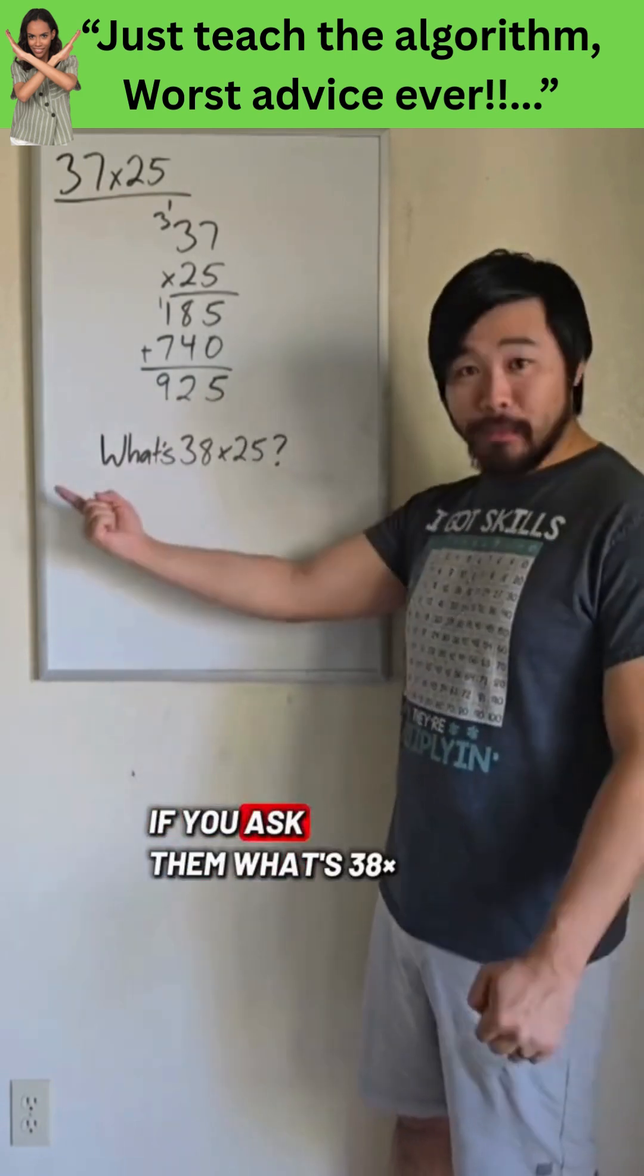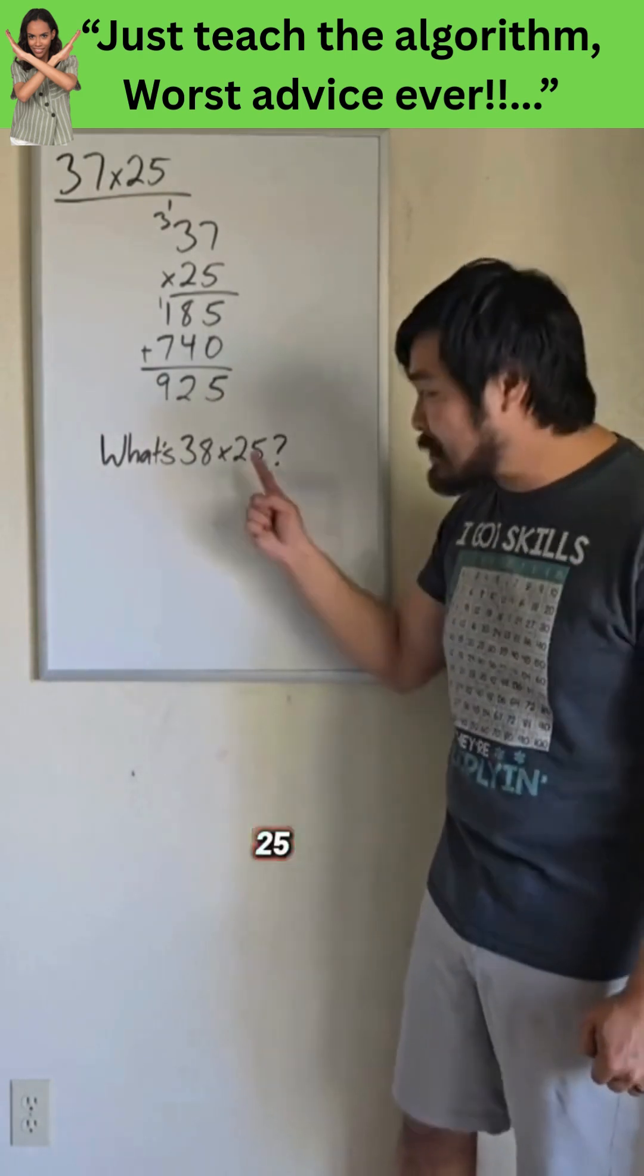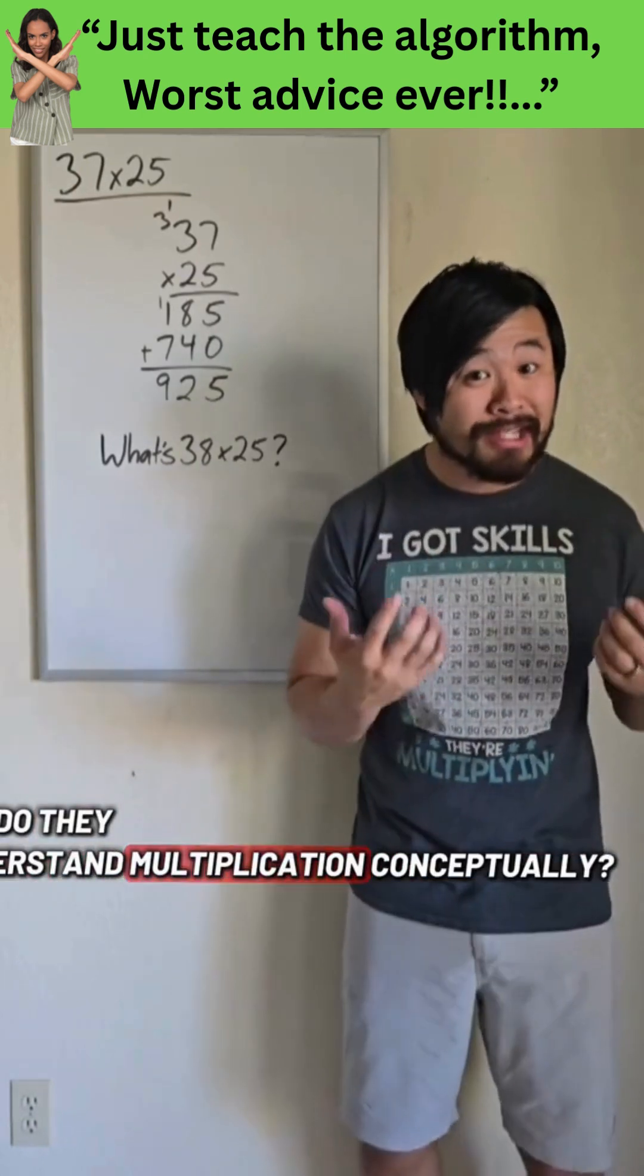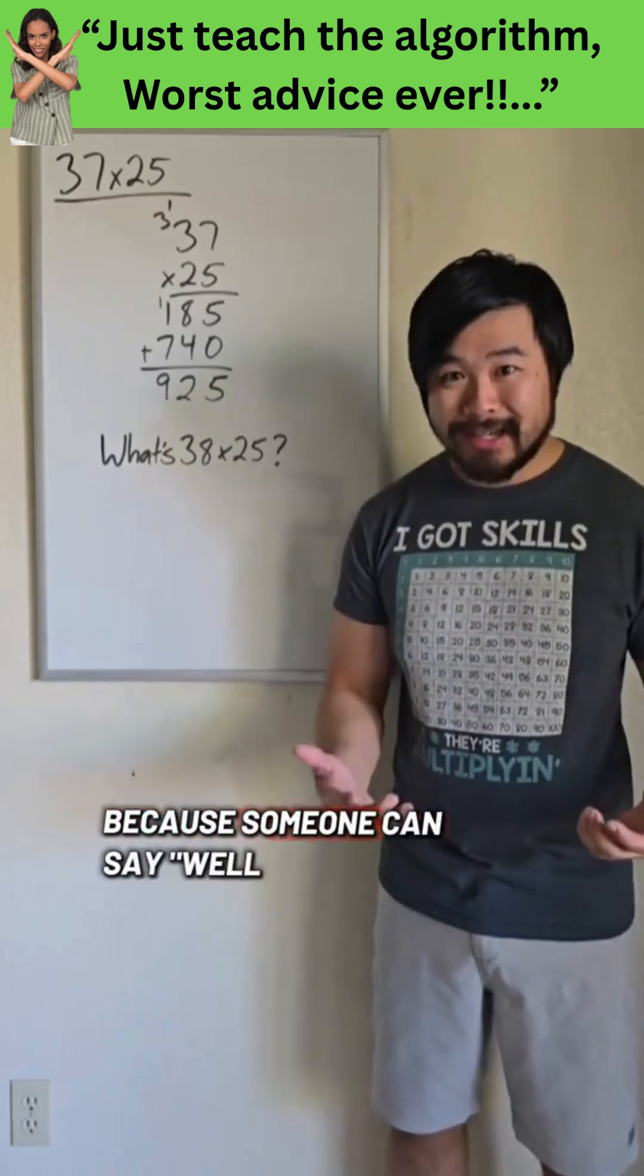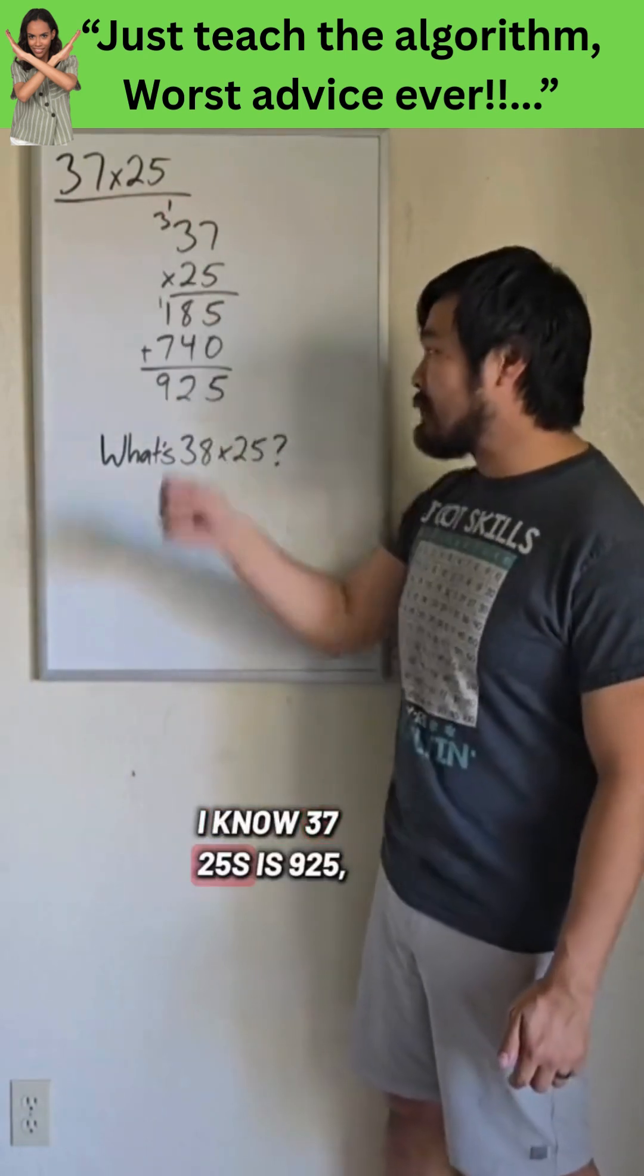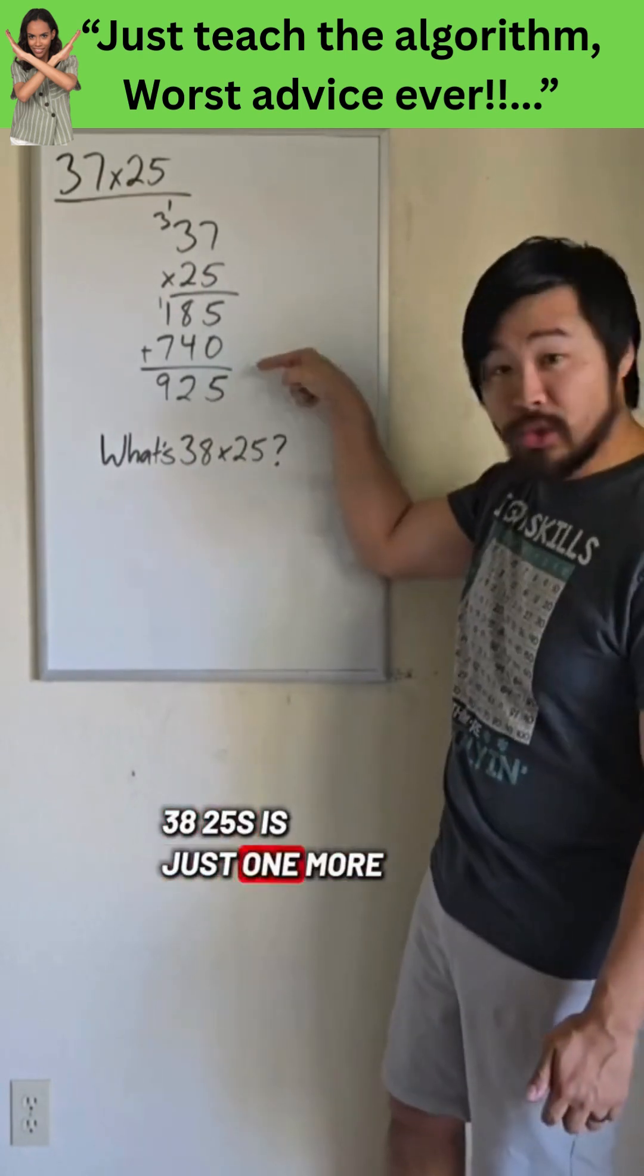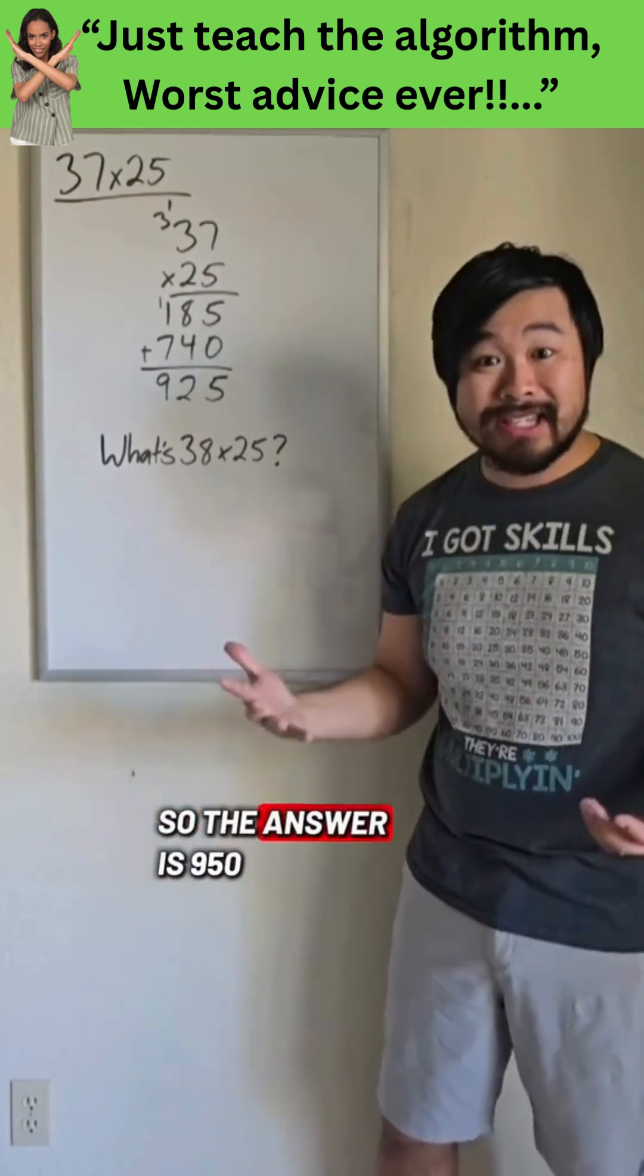if you ask them what's 38 times 25 and they do the algorithm again, well, they got the procedure down. But do they understand multiplication conceptually? Because someone can say, well, I know 37 times 25 is 925, 38 times 25 is just one more 25 than this. So the answer is 950.